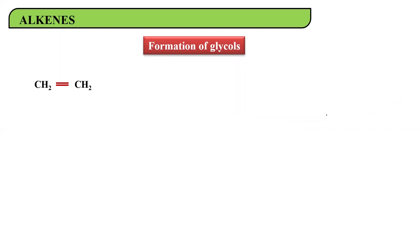Let's see how it happens. Suppose you have an alkene CH₂=CH₂ and you are treating it with cold, dilute, alkaline KMnO₄. Dilute means water has been added, and KMnO₄ is a very good oxidizing agent.